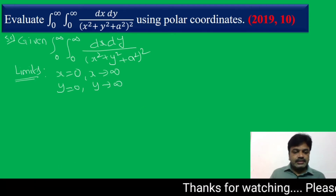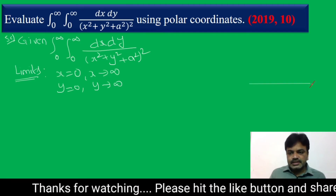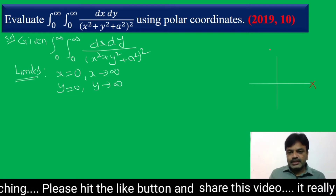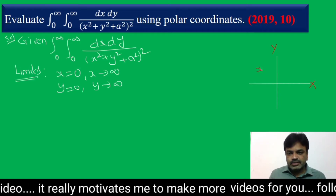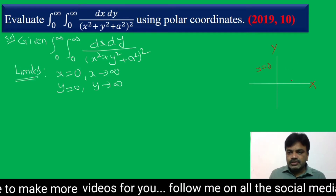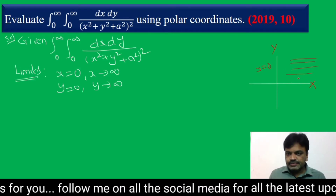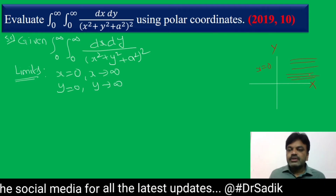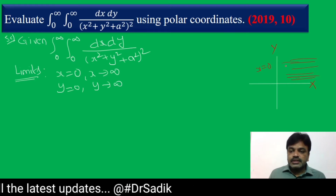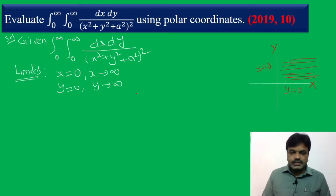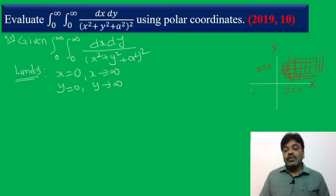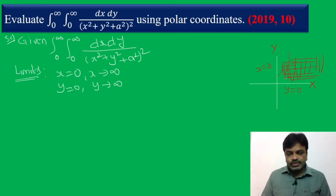Draw the x-axis and y-axis. x is equal to 0 here, and x tends to infinity means the value increases in this direction. Similarly, y is equal to 0 on the x-axis and y tends to infinity upward. Finally, our region is only the first quadrant. Please remember, our region is only the first quadrant.